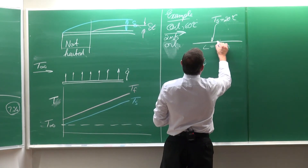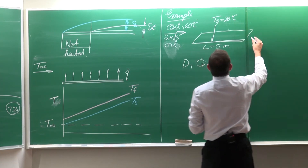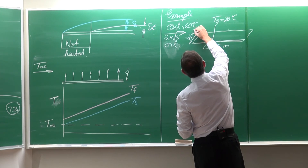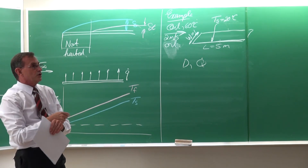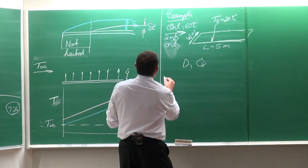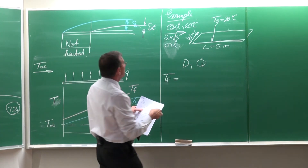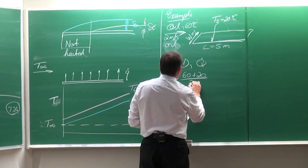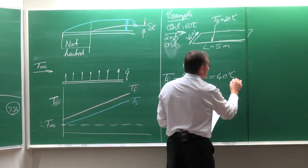The problem does not give the width of the plate, so we are going to assume the width W = 1 m. The film temperature is the average of the oil temperature and the plate temperature: Tf = (60 + 20)/2 = 40°C.